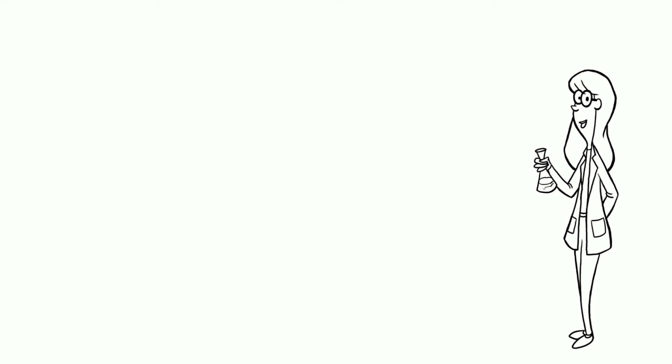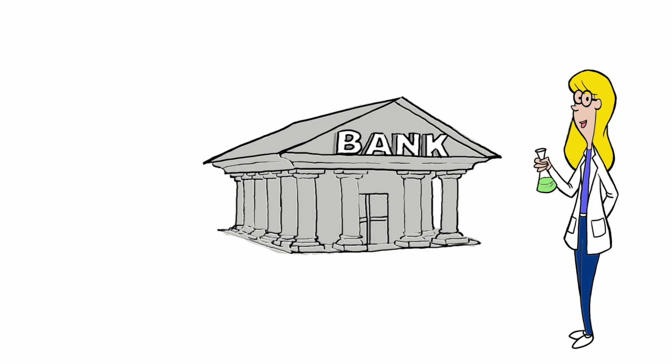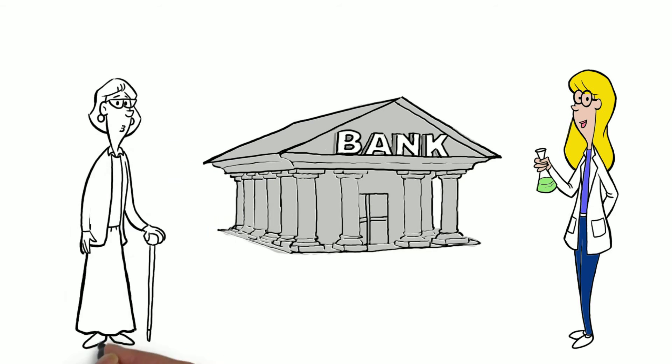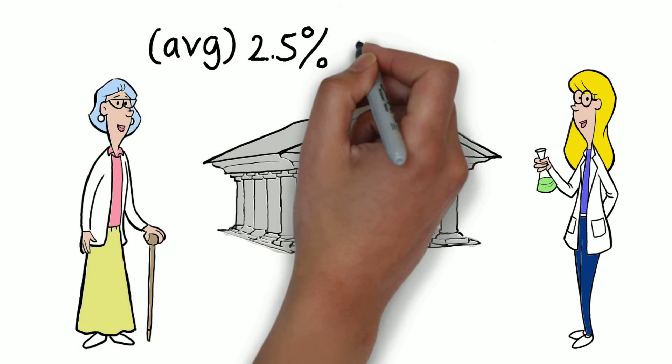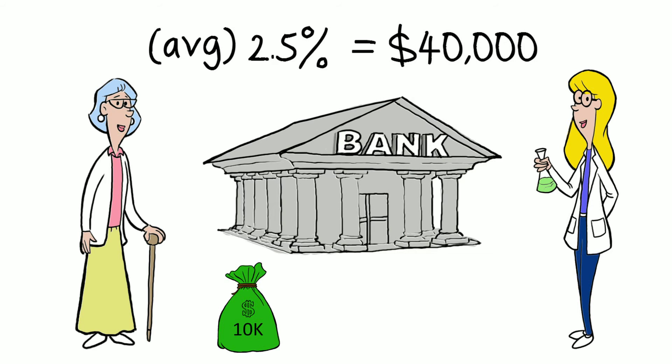The second student puts her money in a savings account, which averages about 2.5% annual return. Because of the compound interest, it doubles every 25 years. When she retires, she has $40,000.